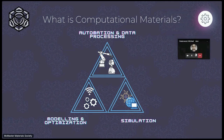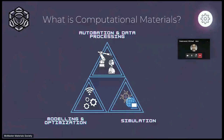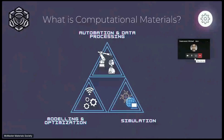Going into computational materials, we've divided it into three main sections. First is automation and data processing, which is really all-encompassing because it's directly related — as you can see in a triangle — and directly connected to the other aspects, so we're going to start explaining it through there.